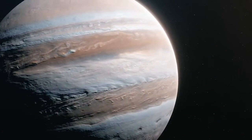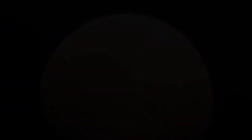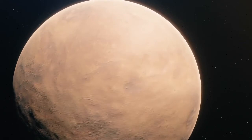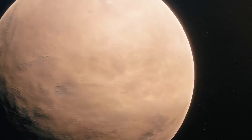One day on Jupiter takes just 10 Earth hours. One day on Venus takes 243 Earth days.